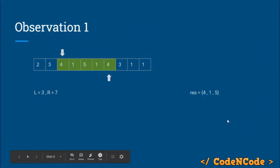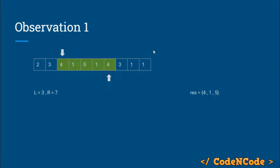Now we have covered the range from three to seven. After traversing three to seven and inserting all elements into the set, we can print the size of the set, which is three. So in the range three to seven there are three unique elements — one, four, and five.